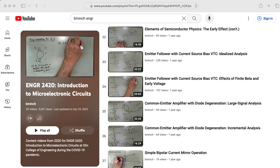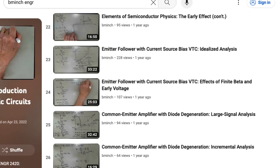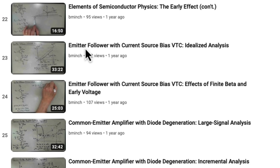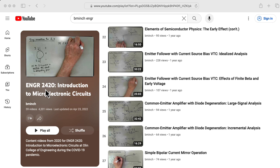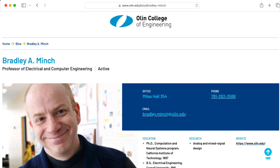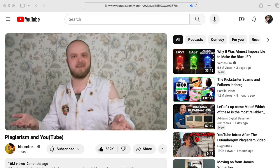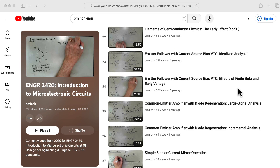If you would like to see this derivation again, but in more detail, check out this lecture titled Emitter Follower with Current Source Bias VTC Idealized Analysis, and a follow-up lecture titled Effects of Finite Beta and Early Voltage, from the ENGR2420 Introduction to Microelectronics Circuits Lecture Series by Brad Minch of the Olin College of Engineering. Before each Ebers-Moll guy comes and yells at me, this is where I got the idea for this video. I just wanted to go through the derivation myself to make sure I understand it.